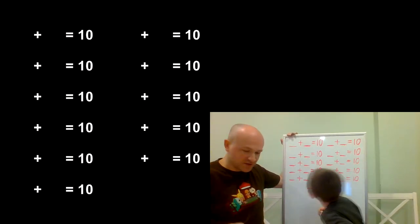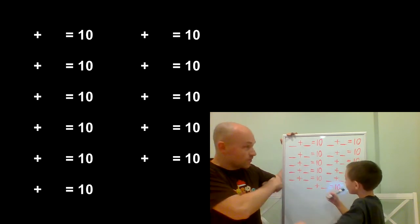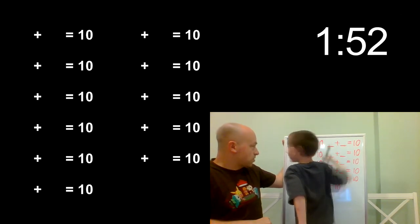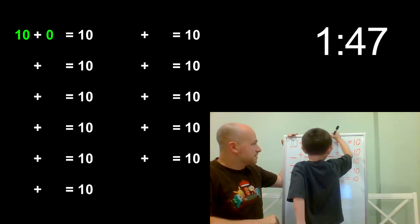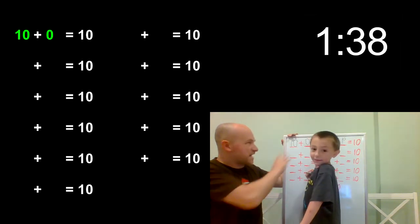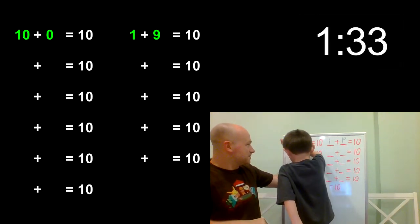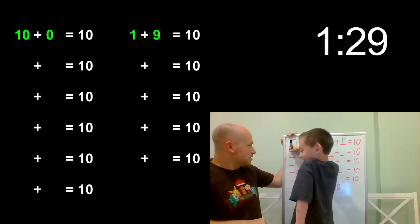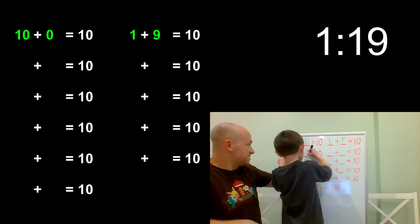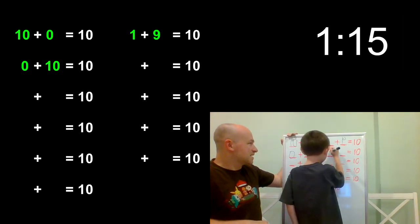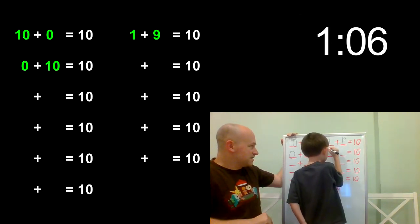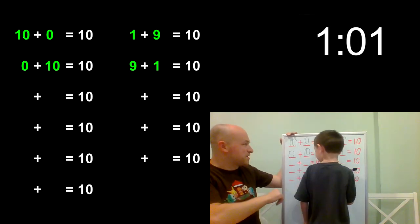What's one combination that makes ten? Ten and zero — okay, that's one. Give me another one. One and nine — good. Zero and ten — that's three. Remember, you can switch the numbers around and that counts as a different combination. Nine and one — okay, that's four. Five — five and five, okay, keep going.